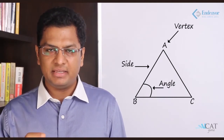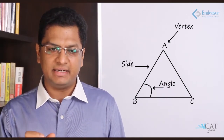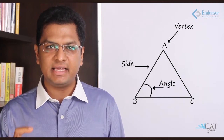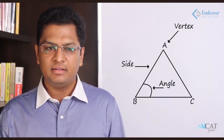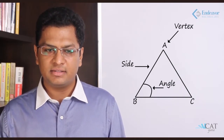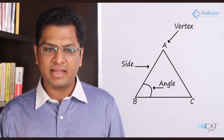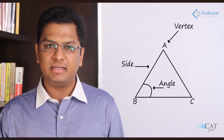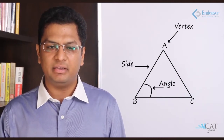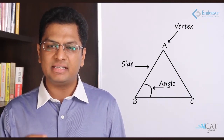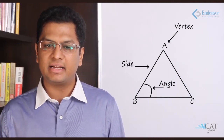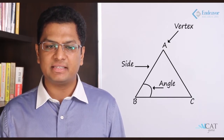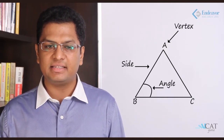AB is called a side. Similarly BC and CA are sides. Now there are angles. The angle between AB and BC is angle B. Similarly there is angle A and angle C. So there is a vertex, there is a side, and there is an angle.